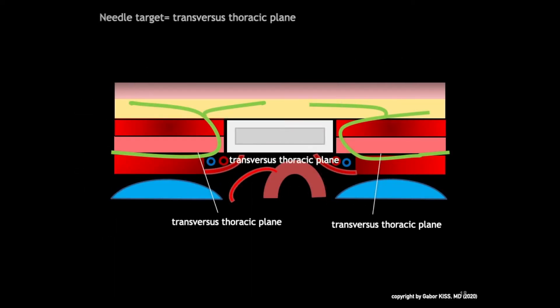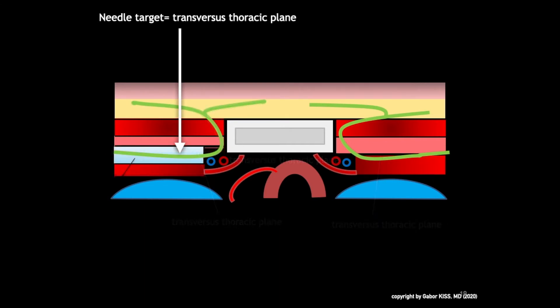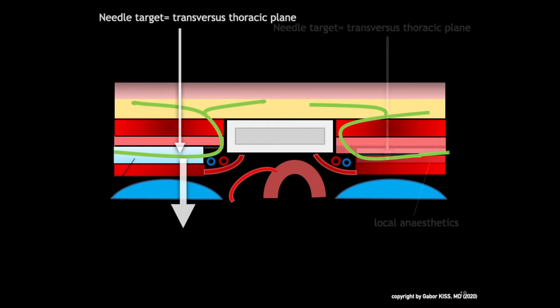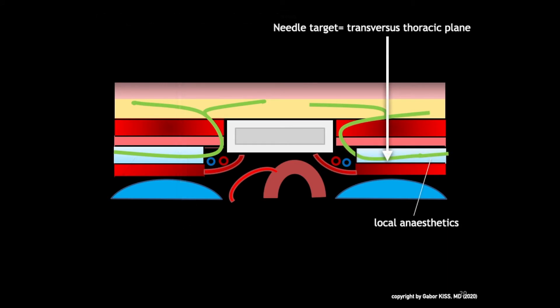The needle target for the TTP block is directed into the transversus thoracic plane, where local anesthetic is injected, displayed here as a blue solution, and also shown on the contralateral side of the sternum.